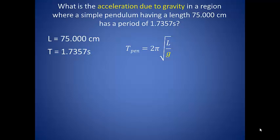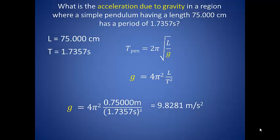What is the acceleration due to gravity in a region where a simple pendulum having a length 75.000 centimeters has a period of 1.7357 seconds? Notice those are some very precise measurements. We have an equation for the period of a pendulum equal to 2 pi times the square root of L over g. So it looks like g is in the most inconvenient spot imaginable. Let's first square both sides to get rid of the square root. Then we can solve for g and plug in our numbers to find 9.8281 meters per second squared.